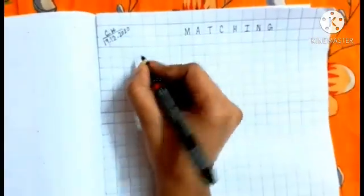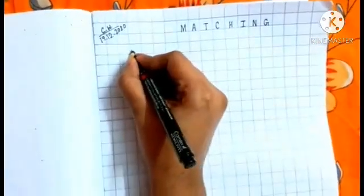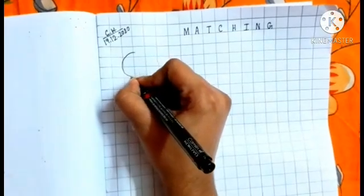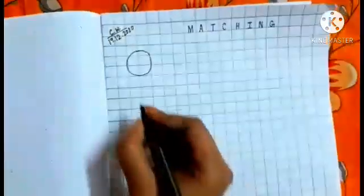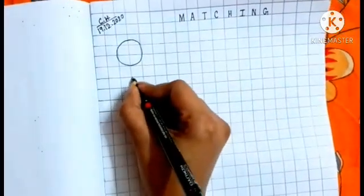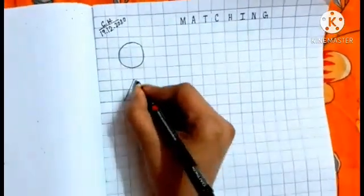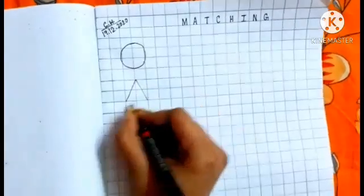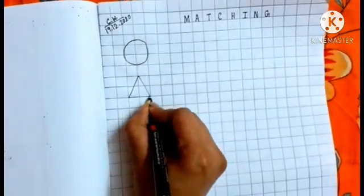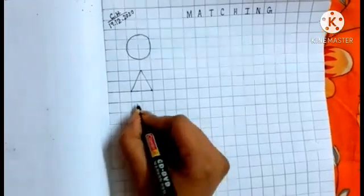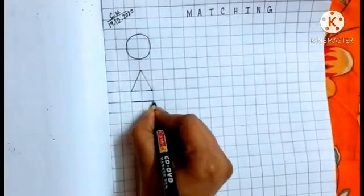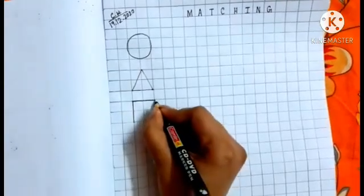We will match shapes with objects. At first I am drawing here a circle. Next I am drawing here triangle. Then I am going to draw a square. Do the same thing.